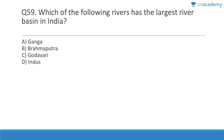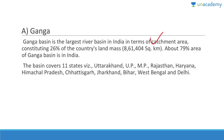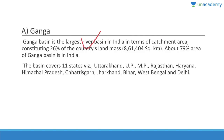Question 59: Which river is the largest river basin in India? Answer is A, Ganga. The Ganga basin is the largest river basin in India in terms of catchment area, constituting 26% of the country's land mass. About 79% of the Ganga basin is in India, and it also extends to other countries like Bangladesh. The basin covers 11 states including Uttarakhand, UP, MP, Rajasthan, Haryana, Himachal, Chhattisgarh, Jharkhand, Bihar, West Bengal, and Delhi.